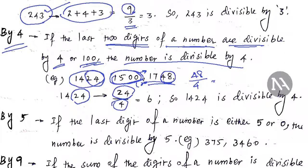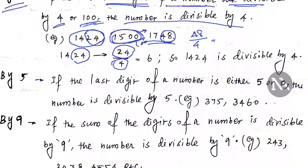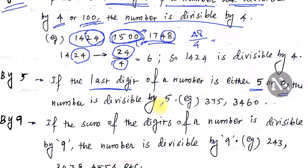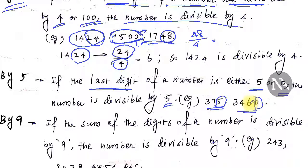For divisibility by 5: this is simple. If the number ends with 5 or 0, then the number is divisible by 5. You can easily tell from the last digit of any number.